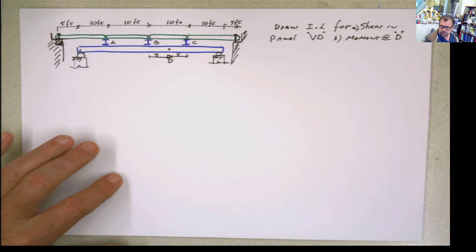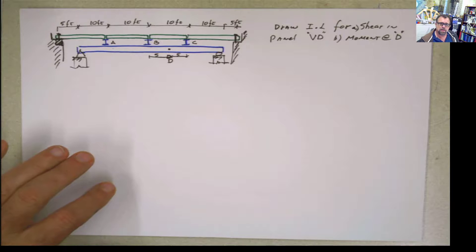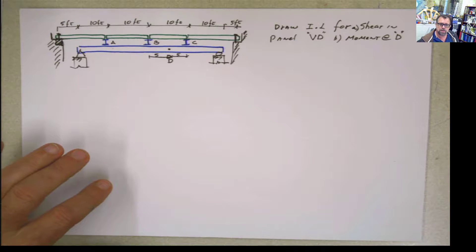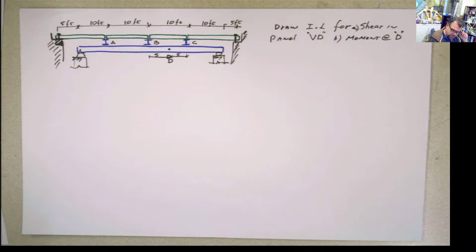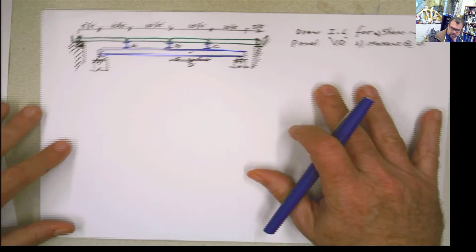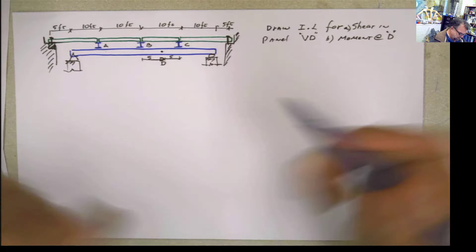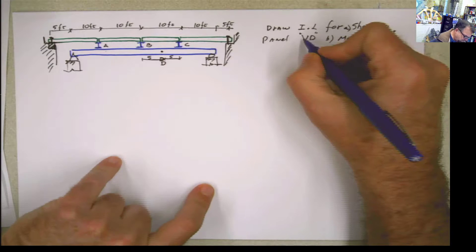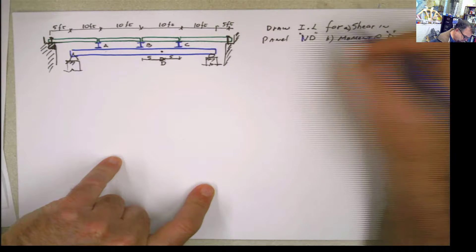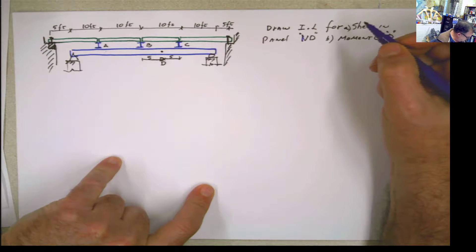This is the second example respecting girders with floor beams. We have to draw the influence line for the shear in the panel AB and the moment at D.